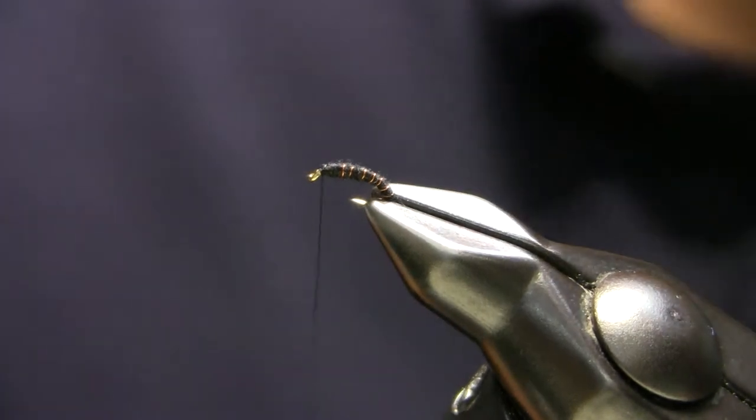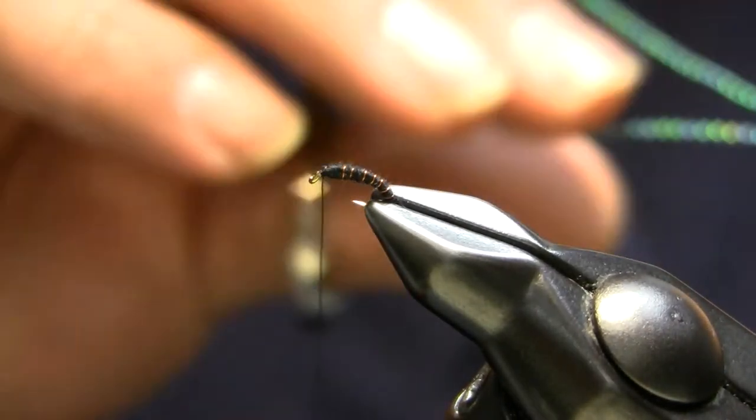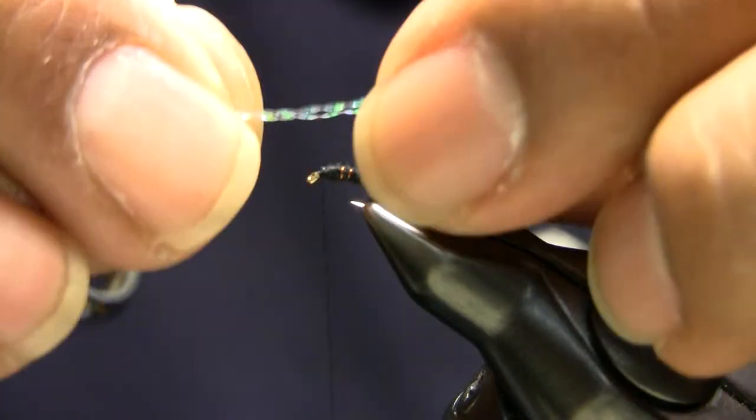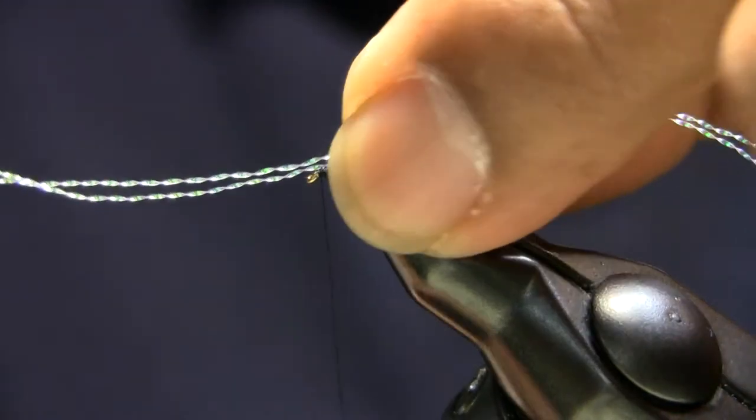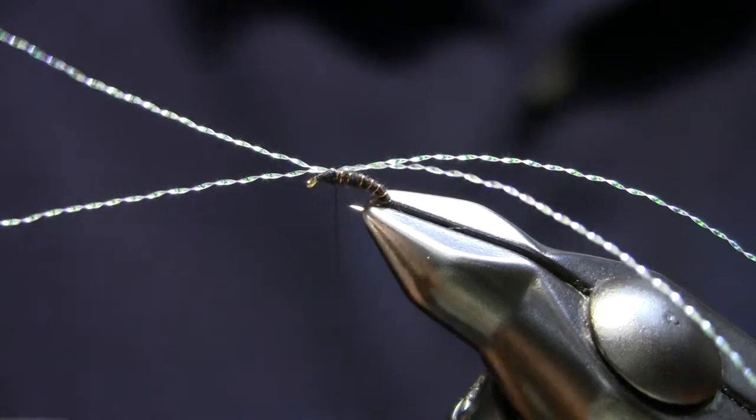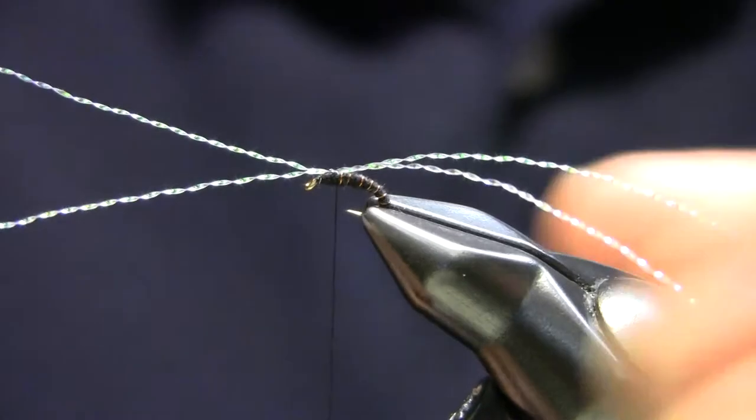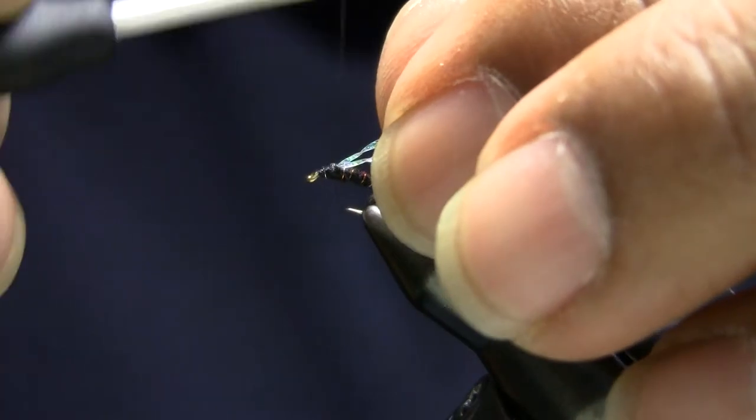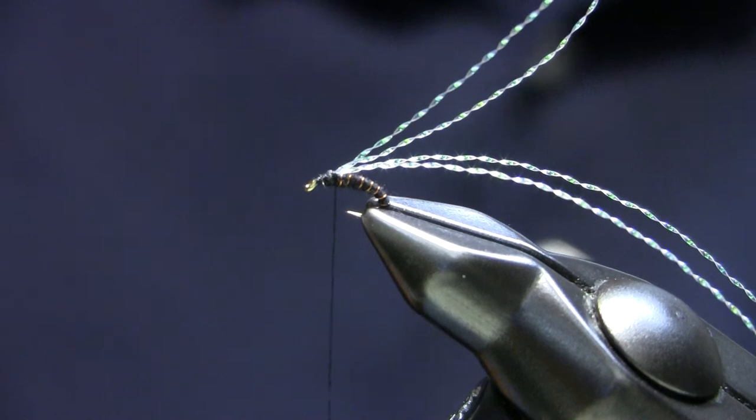And then the crystal flash is two strands of pearl crystal flash. All I do is just kind of shoot that over the eye, tie in a couple wraps to secure it. Make sure it's right up on top. And then pull that back, wrap over a couple times again to secure it down.